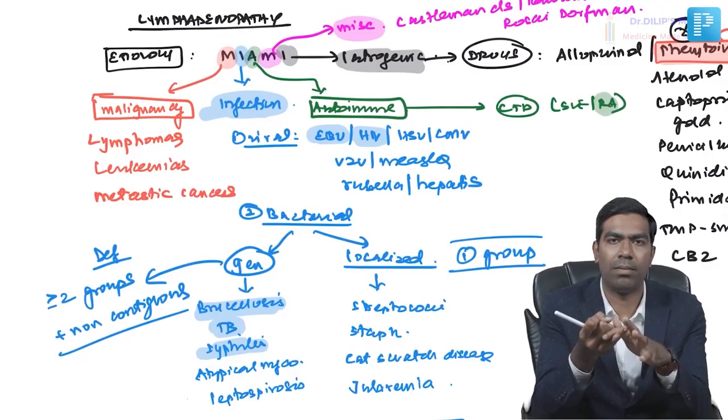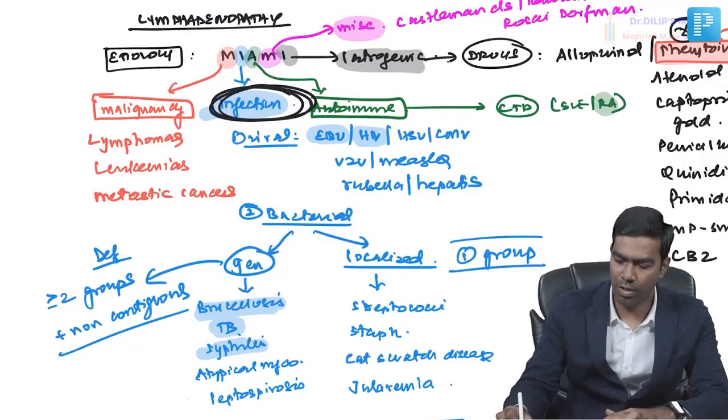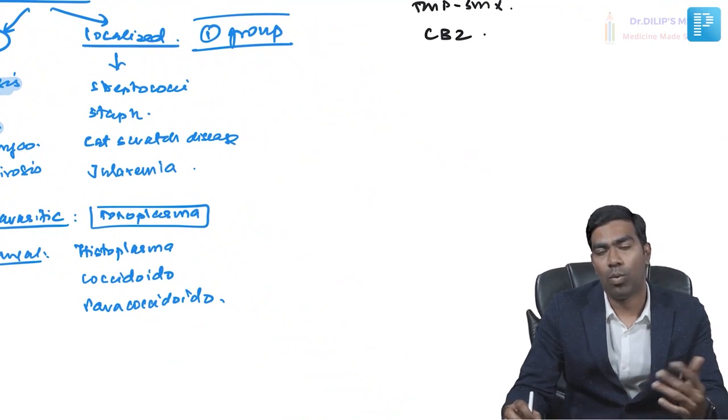So to summarize, MIAMI stands for Malignancy, Infection, Autoimmune, Miscellaneous, and Iatrogenic. Infection is the commonest reason for lymphadenopathy. For malignancy, think lymphoma, leukemia, and metastasis. Infections range from TB to HIV to fungal infections. Under miscellaneous, know Kawasaki disease, Castleman disease, Kikuchi disease, and Rosai-Dorfman disease. For iatrogenic, phenytoin is the most important drug.